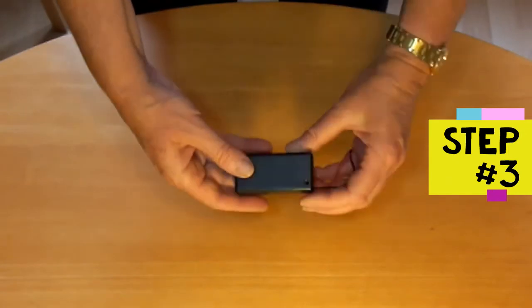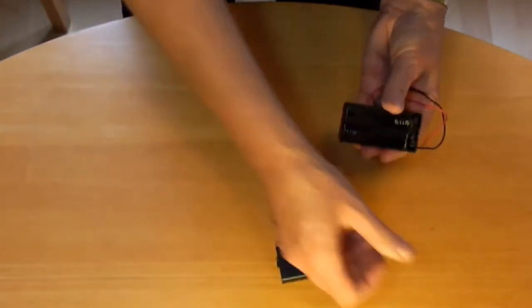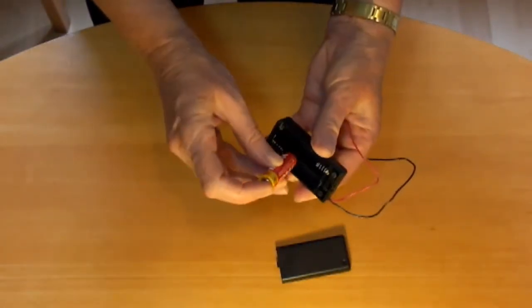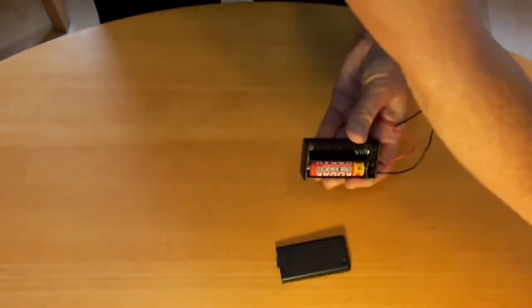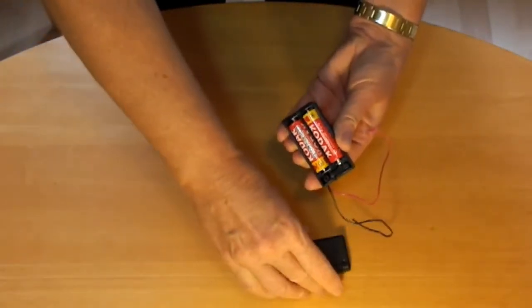Step three is to attach the battery box. Take the lid off the battery box and fit the two zinc batteries. The flat end of the battery should be pushed up against the spring. Re-fit the lid.